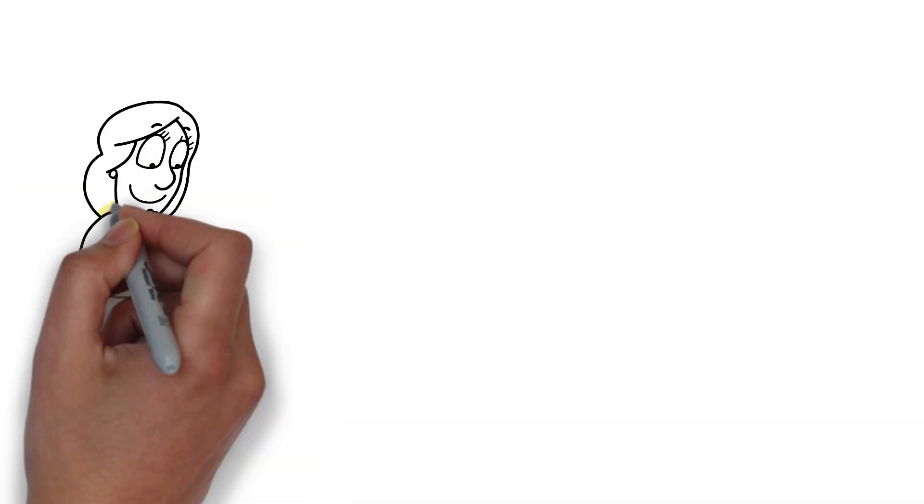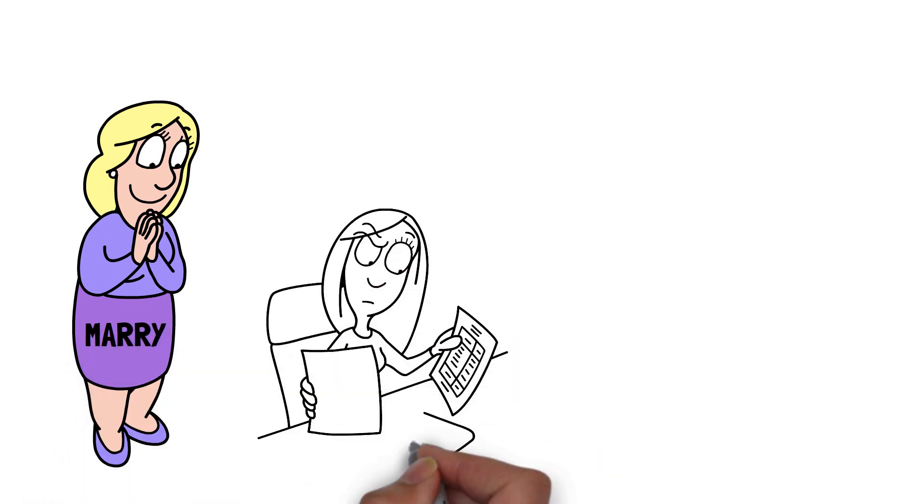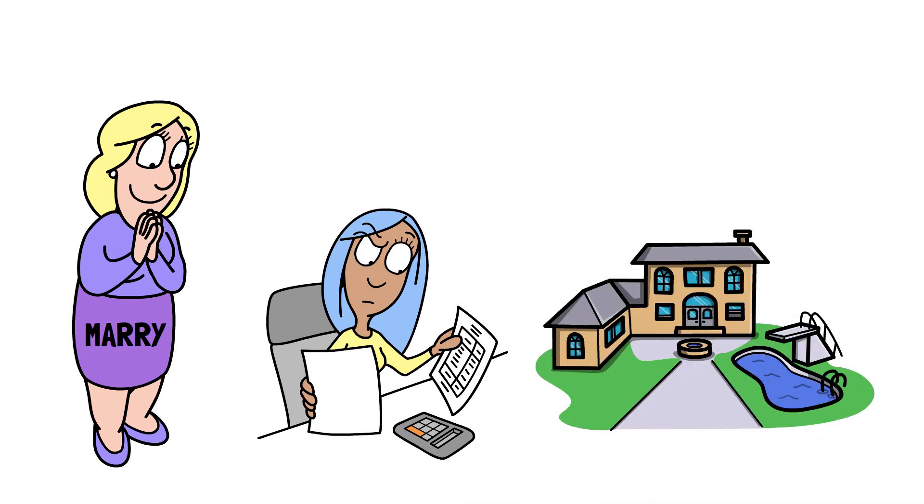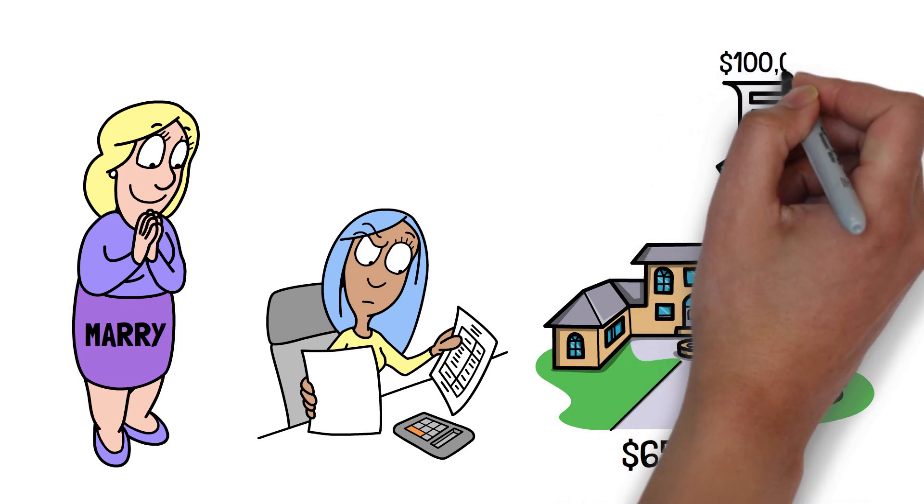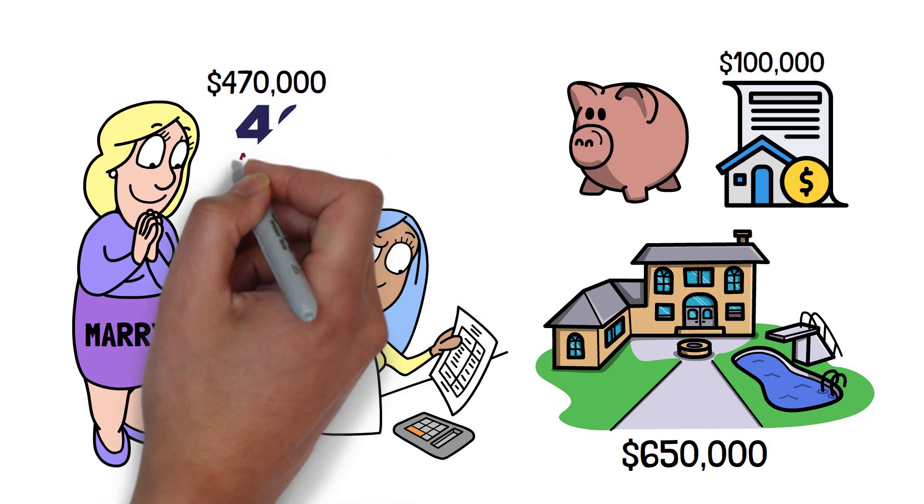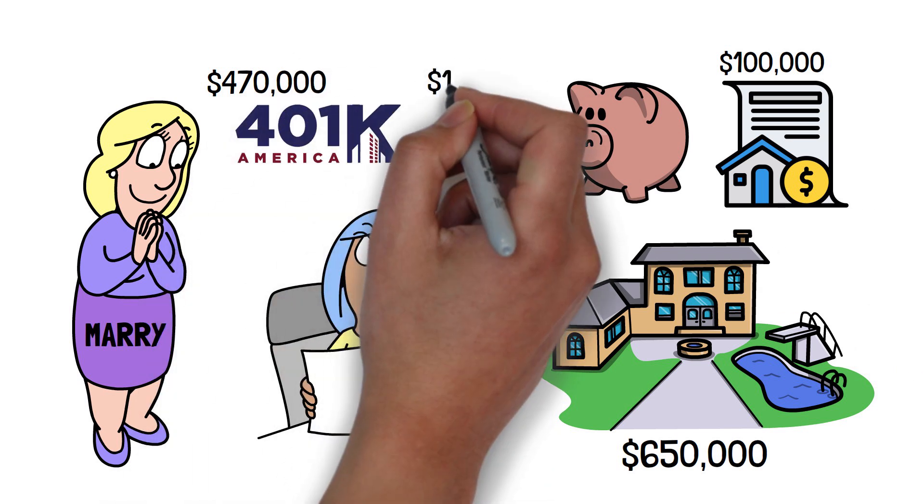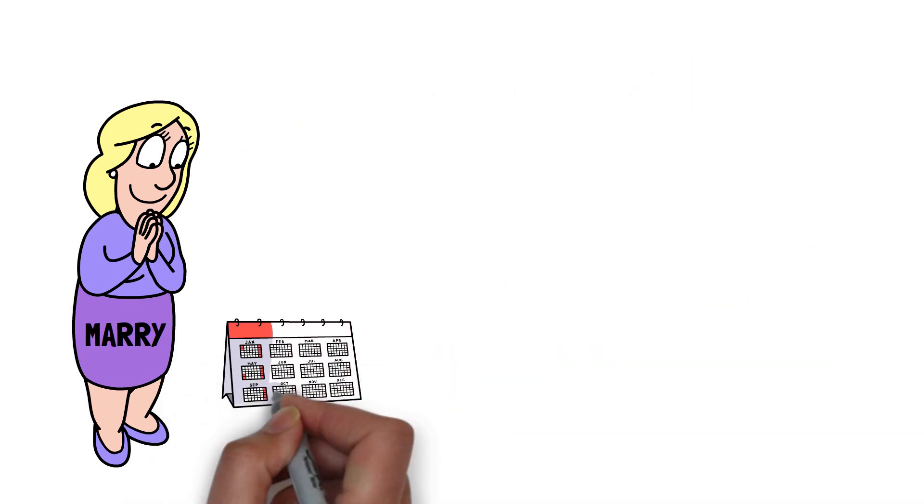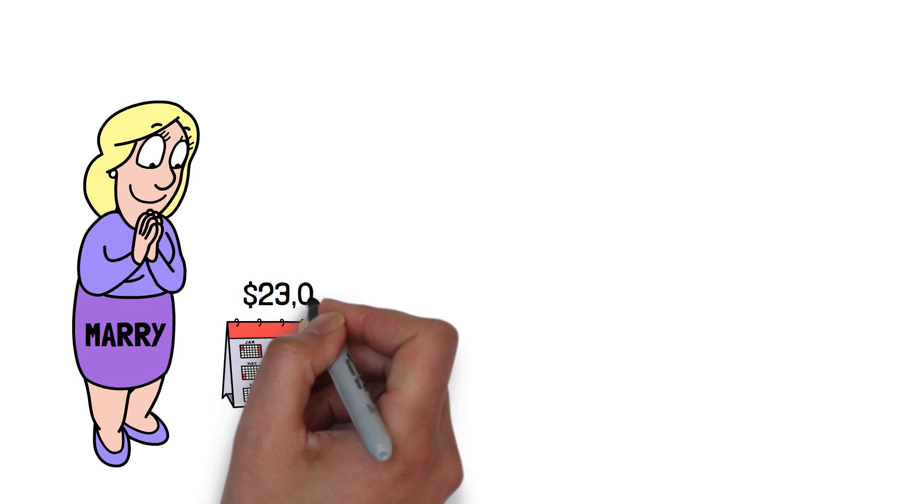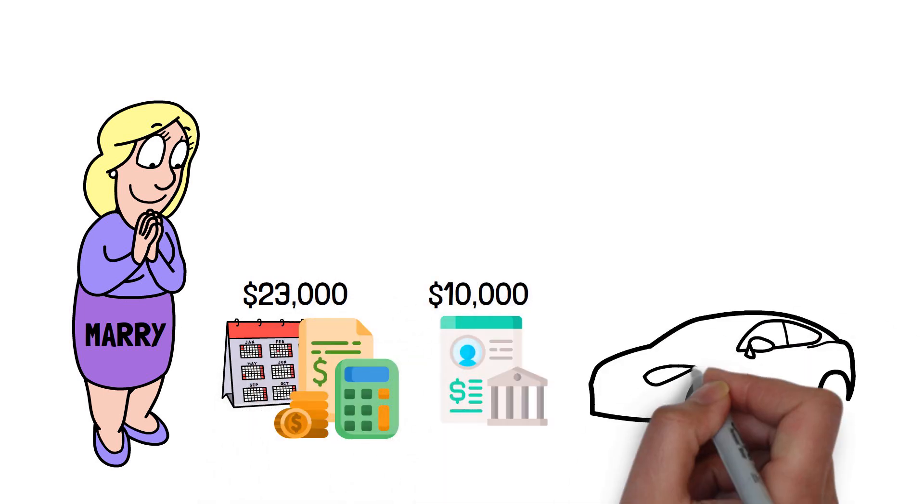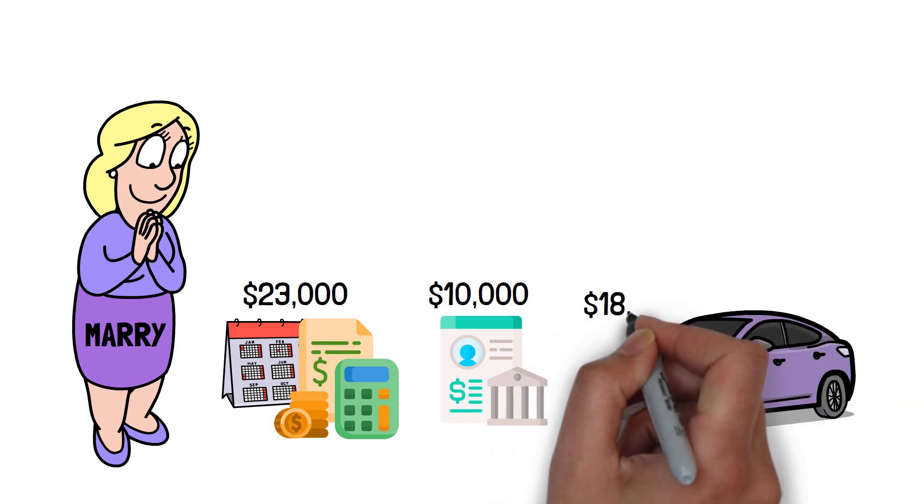Mary is in her 50s, has a good job, and has been frugal with her money throughout her career. She bought her house 15 years ago, and it is currently worth approximately $650,000 with a mortgage balance of $100,000. She's safe for retirement and has $470,000 in a 401k and $190,000 in a Roth IRA. She has a couple months' worth of expenses in her savings account totaling $23,000, plus another $10,000 in her checking account. Mary owns her car outright, and it is worth $18,000.